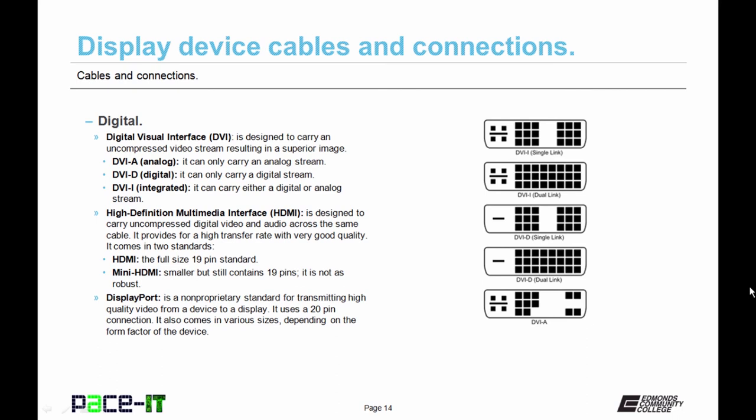Now let's move on to the digital world. And we begin with DVI cables and connections. That's the digital visual interface. Now this is designed to carry an uncompressed video stream, which results in a superior image. Now DVI comes in a different version. There's DVI-A. It can only carry an analog screen. Then there's DVI-D, and it can only carry a digital stream. To kind of bridge the gap, DVI-I was developed. It can carry either a digital or analog stream.